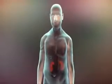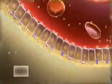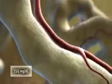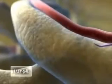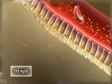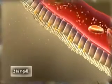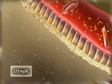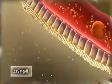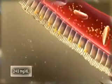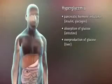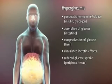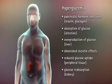In the diabetic state, the kidneys continue to reabsorb virtually all filtered glucose, despite the presence of hyperglycemia. Complete reabsorption of filtered glucose persists until plasma glucose concentrations exceed 200 mg per deciliter, at which point the glucose load in the filtrate overwhelms the capacity of the transporters — the maximum transfer rates attainable by SGLT2 and SGLT1 — thus allowing glucose to spill into the urine. This reflects increased production of glucose by the liver, diminished incretin effects, reduced uptake of glucose by peripheral tissues, and reabsorption of glucose by the kidney.